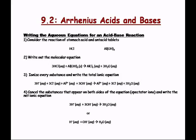Now let's build the molecular, total ionic, and net ionic equations for the reaction between HCl and aluminum hydroxide. HCl is the acid — it has a hydrogen. Al(OH)₃ is the base — it has the OH group.